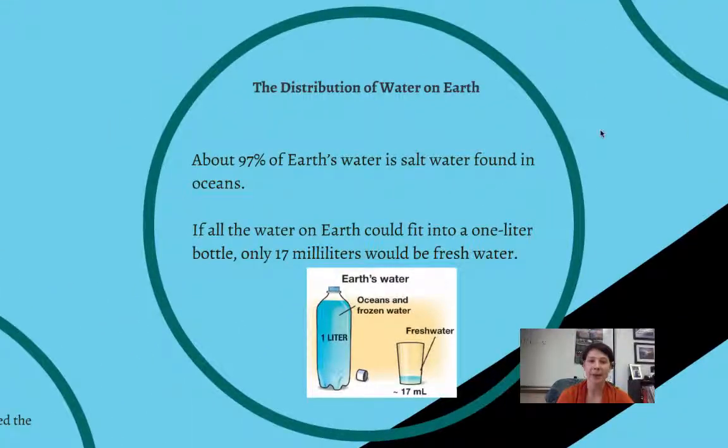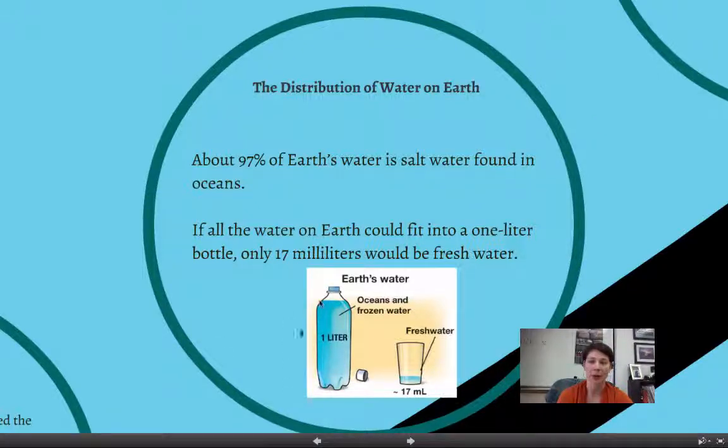So about 97% of Earth's water is salt water, and it's found in the oceans. If you took all of the water on Earth and you put it into one liter bottle, then only about 17 milliliters, just a tiny bit of that, would be fresh water.